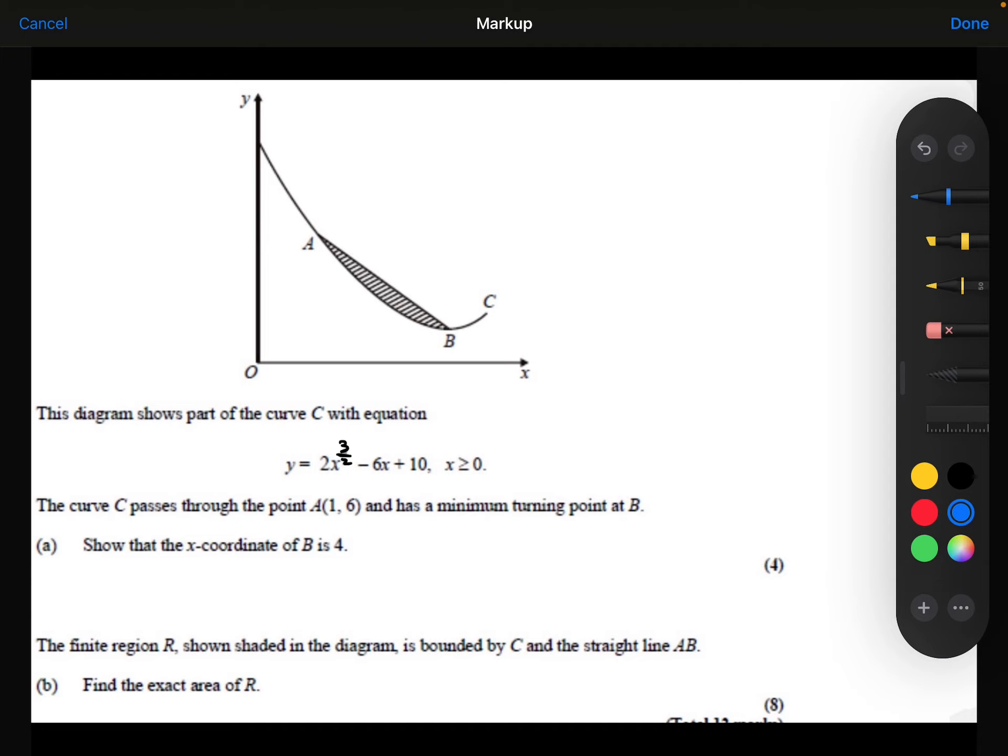The curve passes through the point A, which has coordinates 1, 6, and it has a minimum turning point at B. That's making me think that dy by dx, the gradient, is equal to 0 at point B.